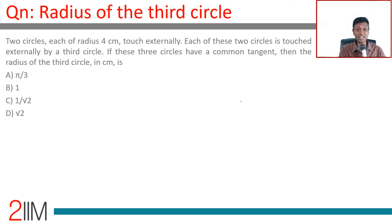Two circles each of radius 4 centimeters touch externally. Each of these two circles is touched externally by a third circle.